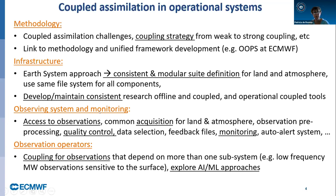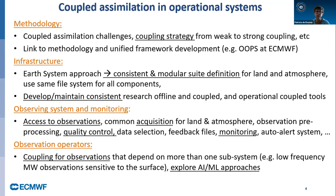Concerning the observing system and monitoring: coupled assimilation for NWP requires real-time and operational access to observations. We need common acquisition systems for land and atmosphere, and the same for the ocean, along with consistent observation preprocessing, quality control, data selection, which is a form of blacklisting, and feedback files, monitoring, and auto-alert systems — everything consistent across the different earth system components. Concerning observation operators, we want better usage of observations that are sensitive to more than one earth system component. For example, low-frequency microwave observations are sensitive to the lowest level of the atmosphere and to the land surface. Coupled assimilation means we have the opportunity — but we need to overcome the technical challenges — to develop coupling through the observation operators, and we also want to explore AI and machine learning approaches.